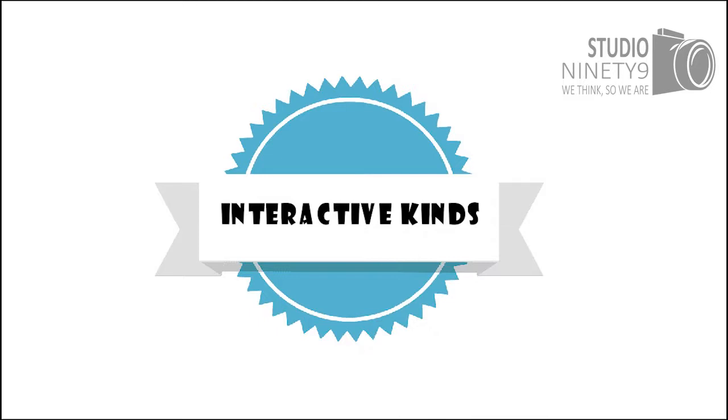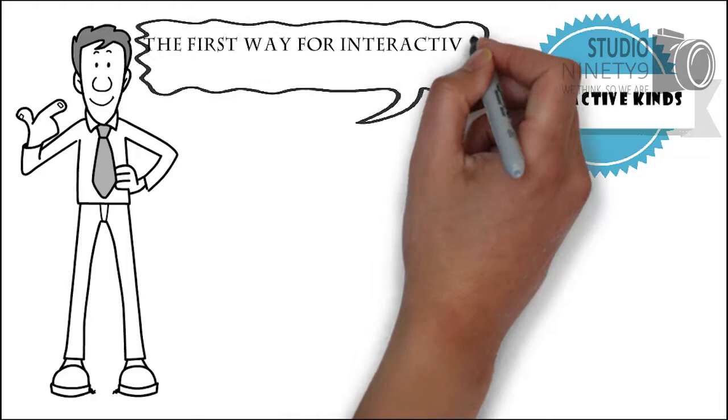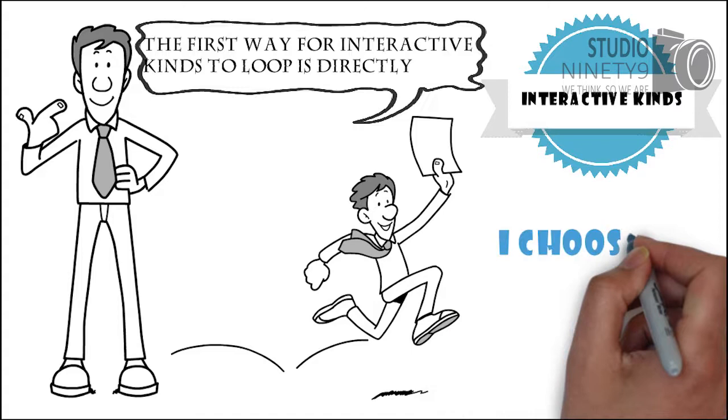These are kinds that have a looping causation by classification. The first way for interactive kinds to loop is directly. This is when I know of some category and I choose to act under the description.